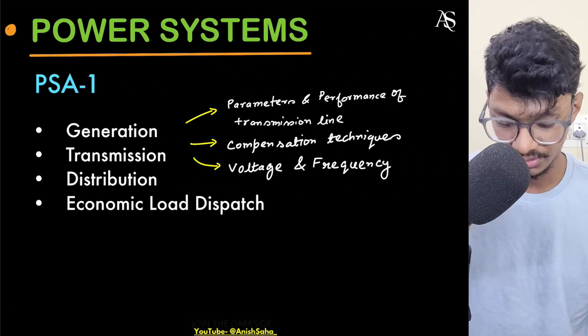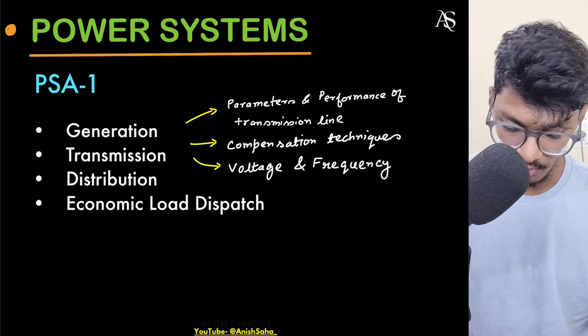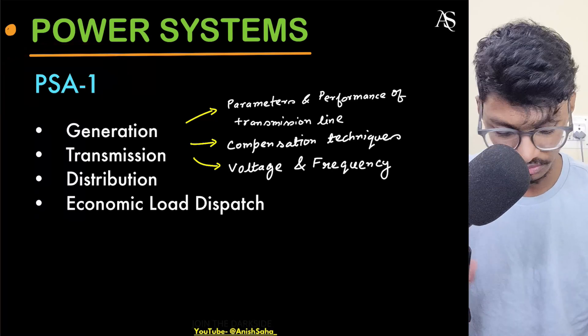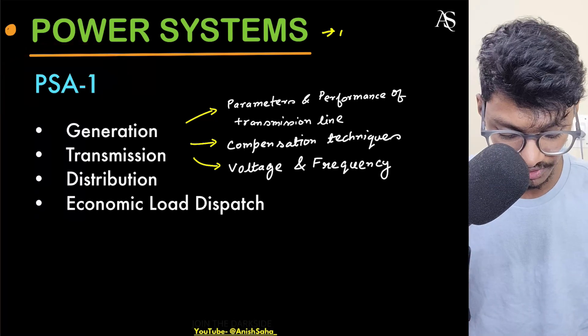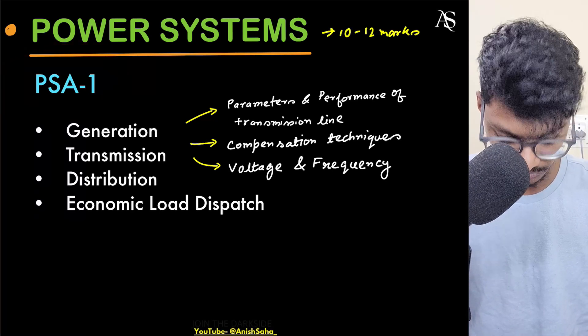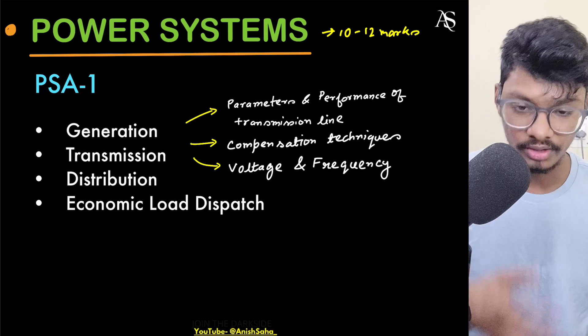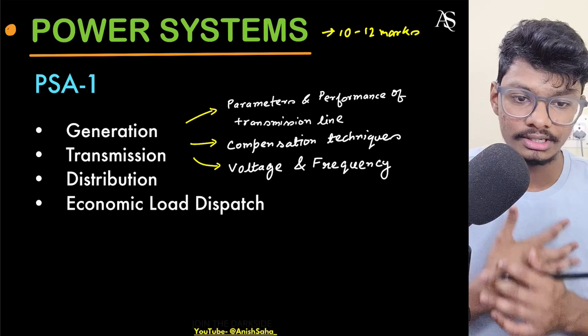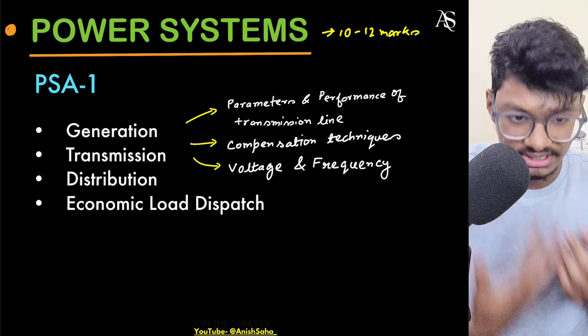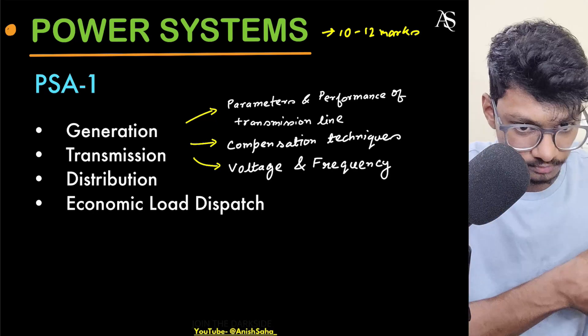Next is Power Systems, which is quite big — there is PSA1 and PSA2. The core subject weightage is about 10 to 12 marks. I recommend you can skip PSA1 broadly, but there are a few topics inside PSA1 you should not skip.